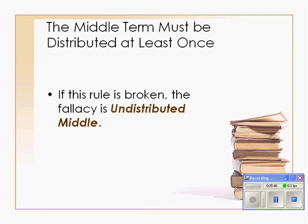And finally, rule number 1: the middle term must be distributed at least once. If this rule is broken, the fallacy is undistributed middle.